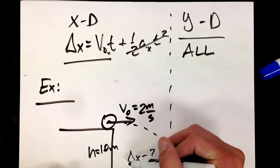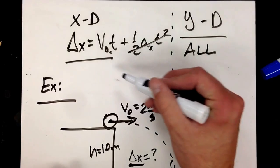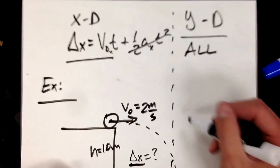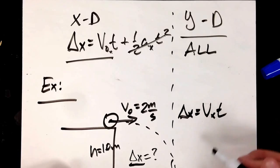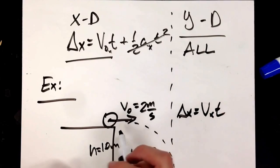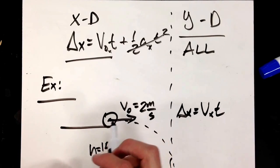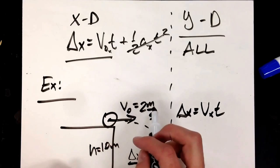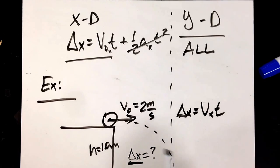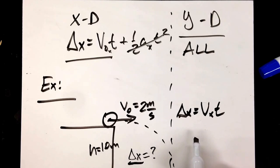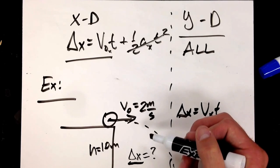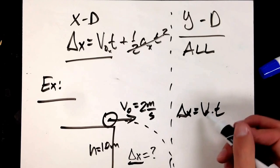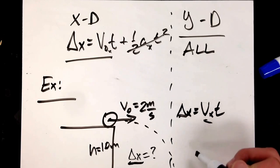If I want to know where it will land — the delta x — I only have one equation at my disposal: delta x equals v_x times t. I know v_x, it's the initial speed — the only speed it has in the x direction — and it will always be moving at two meters per second in the x dimension. However, it begins to fall, so its y velocity will change, but its x velocity will remain constant.